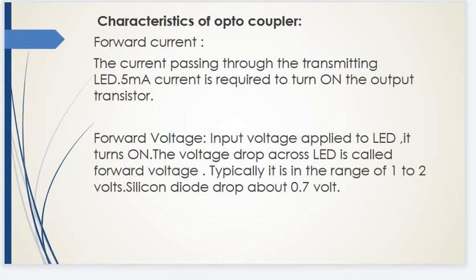Characteristics of Optocoupler: Forward Current — the current passing through the transmitting LED is 5 mA and is the current required to turn on the output transistor. Forward Voltage — the input voltage applied to the LED that turns it on; the voltage drop across the LED is called forward voltage, typically in the range of 1 to 2 V. Silicon diode drop is about 0.7 V.